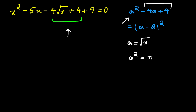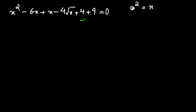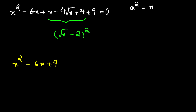Instead of adding x directly, I'm going to break negative 5x into negative 6x and x in order to have an x to complete the square. So we have x squared minus 6x plus x minus 4 times the square root of x plus 4 plus 9 equals 0. We can then replace the three terms x minus 4 times the square root of x plus 4 with the quantity square root of x minus 2 all squared.